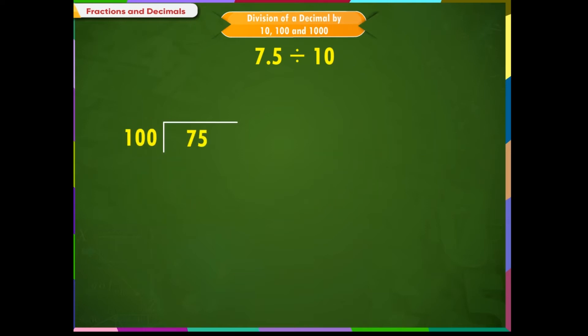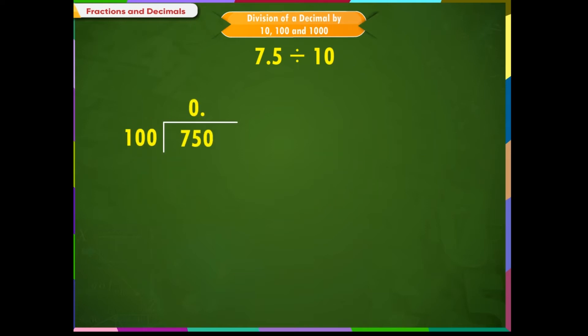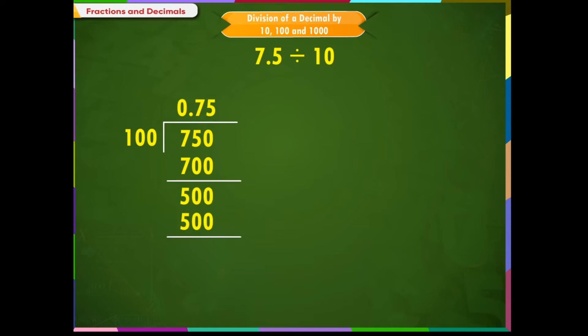Now, we will solve the problem using the long division method. Thus, we get 7.5 divided by 10 equals 0.75.